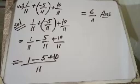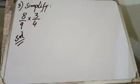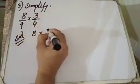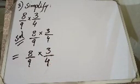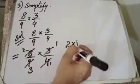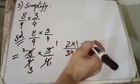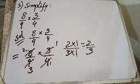इसके बाद हम question number 3 करेंगे। 8 over 9 multiply by 3 over 4. Denominator same नहीं है, अलग-अलग हैं। गौर से देखिए, इसके elements आपस में divisible हैं: 4 into 2 equals 8, 4 into 2 equals 8, 3 into 3 equals 9, 3 into 1 equals 3. 2 को 1 से multiply करेंगे, नीचे बचा 3 multiply by 1, तو answer आया 2 over 3.